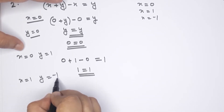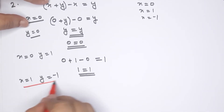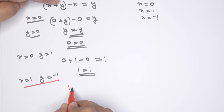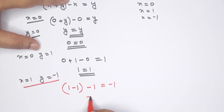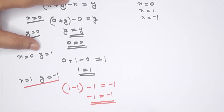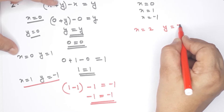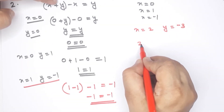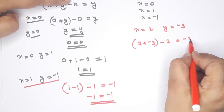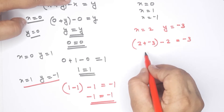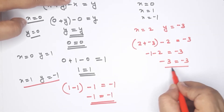Now I write x equals 1, y equals negative 1. So x equals 1, y equals negative 1. Then x plus y is 1 plus negative 1, which equals 0. And negative 1 is equal to negative 1 — clearly. Next, what values? x equals 2, y equals negative 3. Here we have 2 plus negative 3. x becomes minus 2, and minus 2 equals minus 3... that is equal to minus 3.